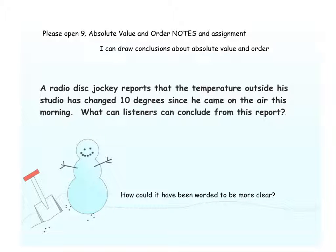So he should have been more clear. He should have said that it changed a positive 10 degrees or a negative 10 degrees, or he could have said it went up 10 degrees or the temperature went down 10 degrees. But he did not indicate a direction. So we can only conclude that it changed 10 degrees, not the direction of the change.